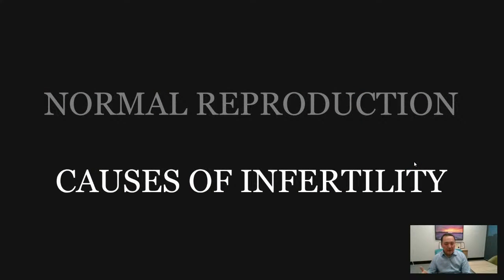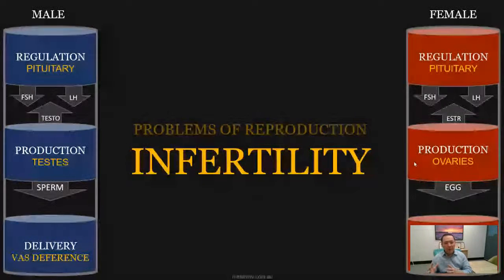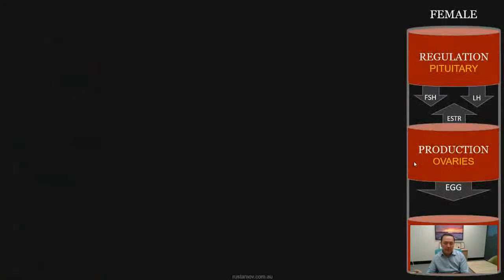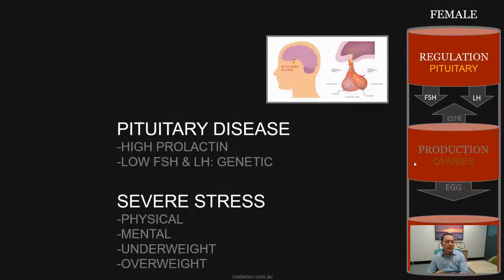Now we will move on to the causes of infertility. A problem or breakdown at any point of this production process can lead to problems of reproduction, which we call infertility. Today we will not cover male infertility, as that will be addressed next week. Today we will be talking about causes of female infertility, going step by step starting from the top — regulation.